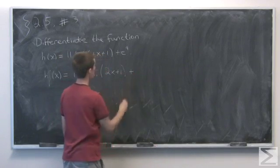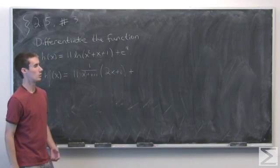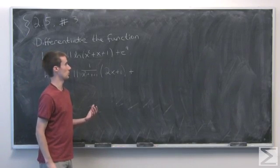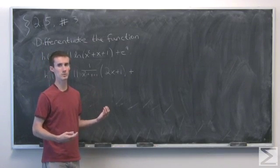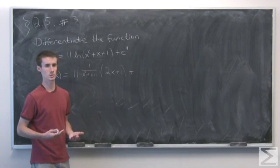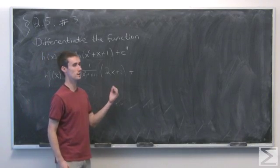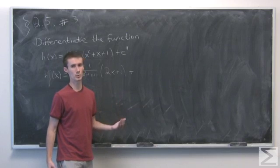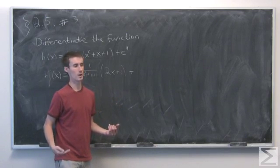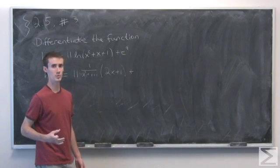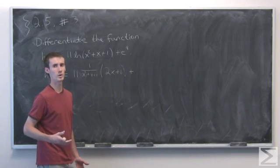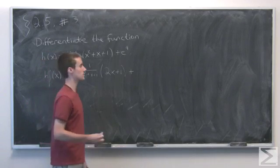And add the derivative of the last term, which is a common mistake to write this as 9 times e to the 9 minus 1, applying the power rule. That's actually not correct because e is just a number and we're raising a number to a constant, in this case 9. So the result is just going to be a number and the derivative of any constant is 0.